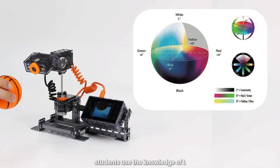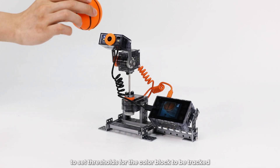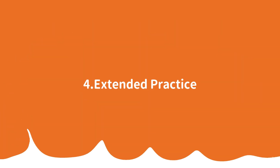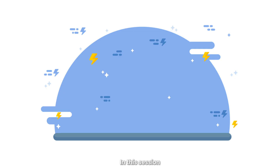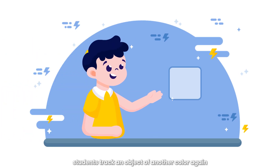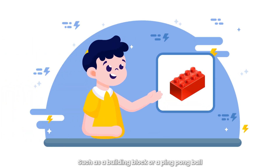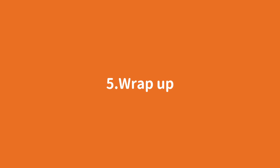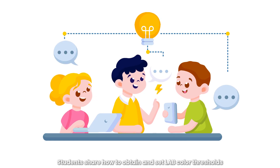In this section, students use the knowledge of Lab color space to set thresholds for the color block to be tracked and write a program to complete the color tracking task. Students then track an object of another color, such as a building block or a ping pong ball. Note that the object must be solid in color and appropriately sized. Students share how to obtain and set Lab color thresholds and demonstrate the implementation effects of their color tracking tasks.